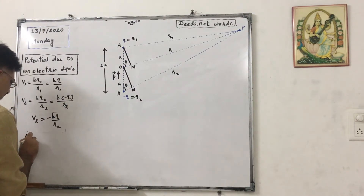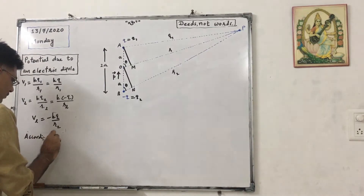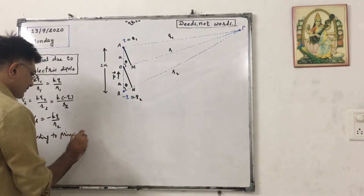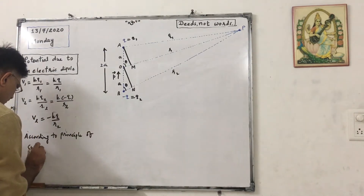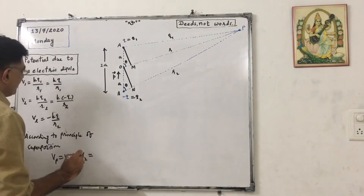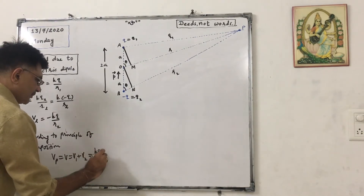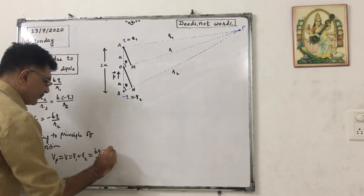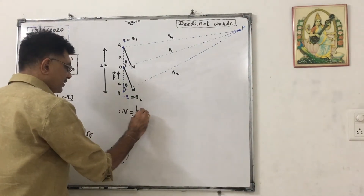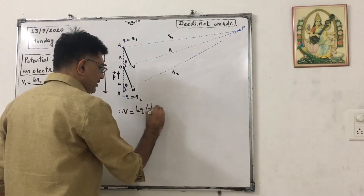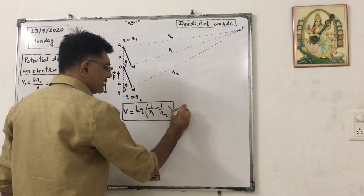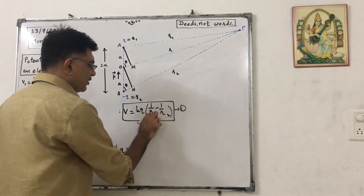Now according to the principle of superposition, because there are two charges, we have to apply the principle of superposition. V at P equals V1 plus V2, and that will be equal to kq by r1 plus minus kq by r2. So V equals kq taken common, into 1 upon r1 minus 1 upon r2. That is equation 1 for us. Now we have to find out 1 upon r1 and 1 upon r2.